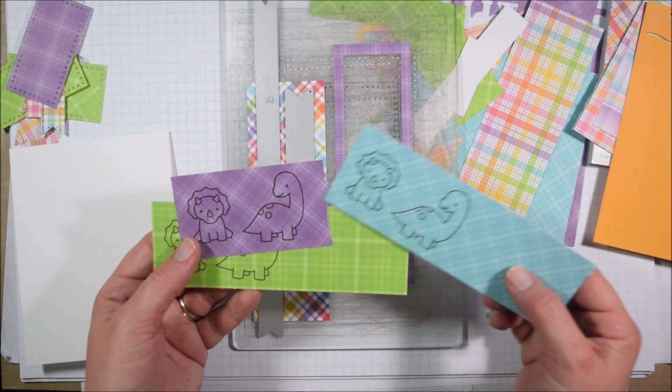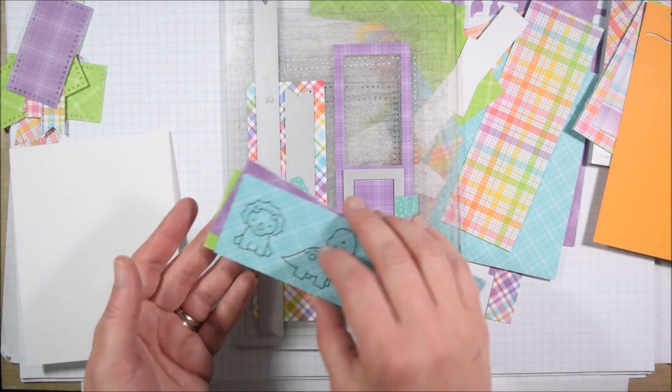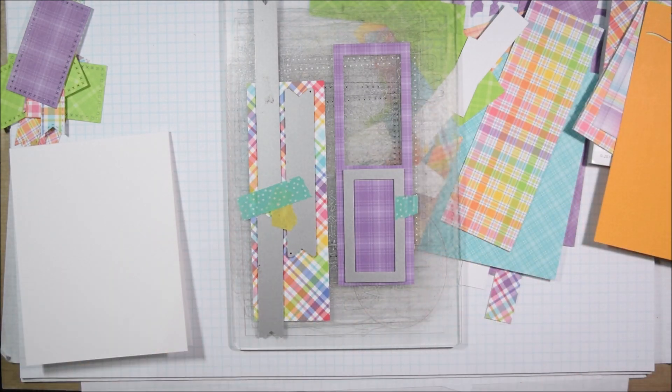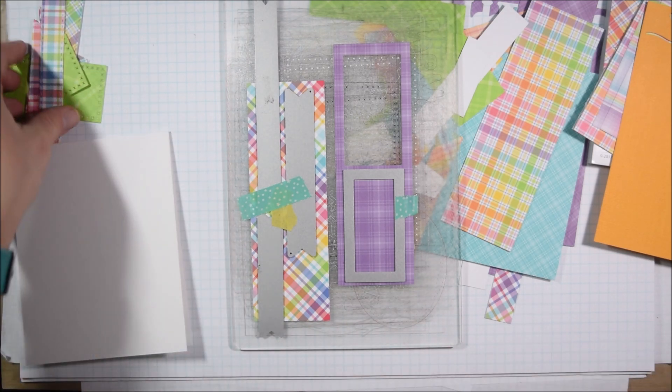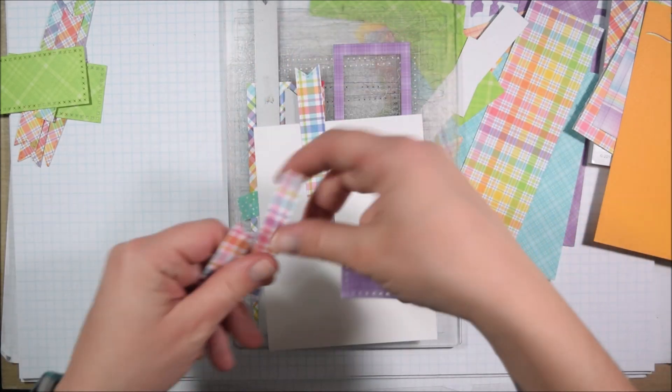I'm also going to stamp my Lawn Fawn dinosaurs onto some of the scrap pattern paper. Not all pattern paper works as well for this kind of thing, particularly stamping on, because you need a mostly solid piece of pattern paper for it.